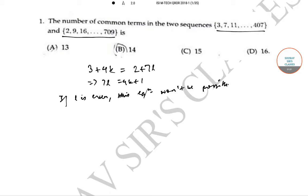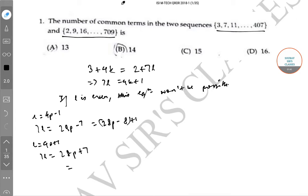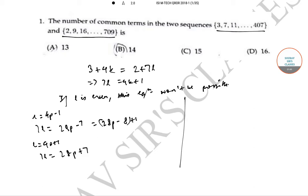Now let l be odd of the form 4p - 1, so 7l = 28p - 7, which can be written as 28p - 8 + 1. Also, if l = 4p + 1, then 7l = 28p + 7.